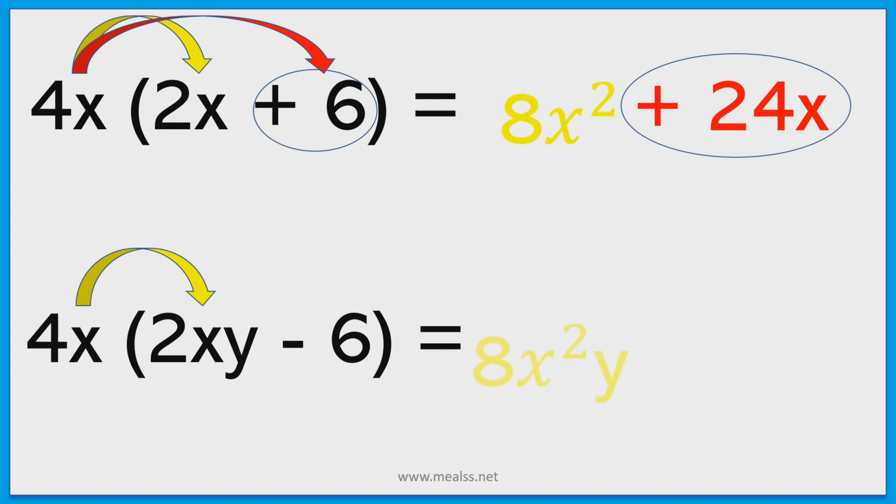4x times by 2xy. Multiply the like terms you get 8x squared y. 4x multiplied by negative 6 is going to give us negative 24x.